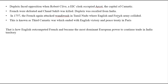In 1757, the French again attacked Wandiwash in Tamil Nadu, where the English and French armies collided in what is known as the Third Carnatic War. After that, the French were in total devastation, and it ended with an English victory and a peace treaty in Paris. After the Third Carnatic War, the English out-competed the French and became the most dominant European power with trade influence in India. By 1757, the Portuguese, Spanish, Dutch, and now the French were all out of the scene.